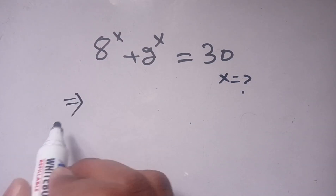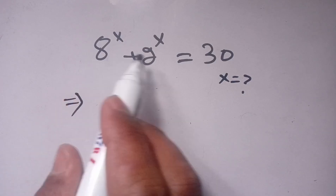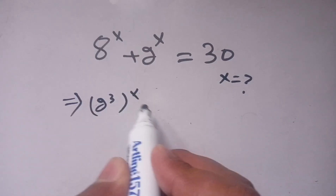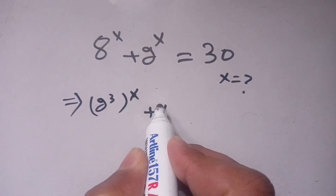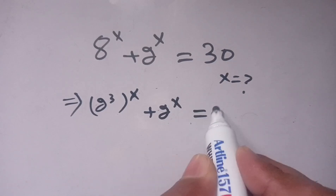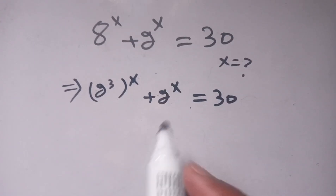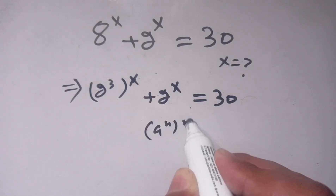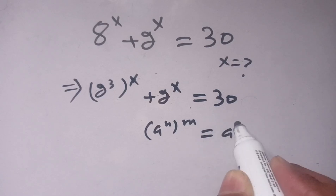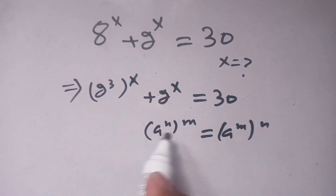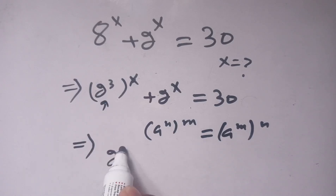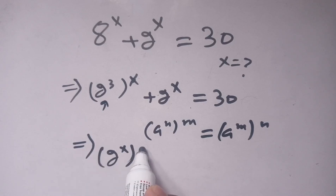Let us solve this. First of all, we can write it in terms of 2. We can write it as 2 to the power 3, bracket to the power x, plus 2 to the power x is equal to 30. Now we know that a to the power n, bracket to the power m, is the same as a to the power m, bracket to the power n. We use this identity and write it as 2 to the power x, bracket to the power 3, plus 2 to the power x.